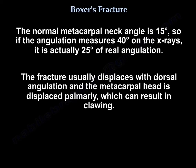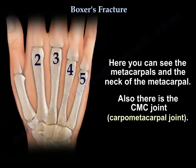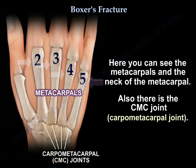The fracture usually displaces with dorsal angulation, and the metacarpal head is displaced palmarly, which can result in clawing. Here you can see the metacarpals, the neck of the metacarpals, and also the CMC joint — the carpometacarpal joint.